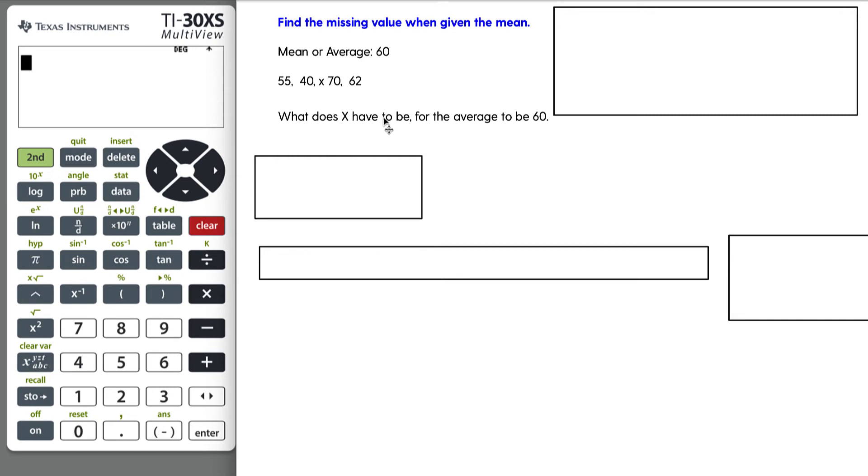And so the question is, what does X have to be for the average to be 60? So it's kind of a weird situation, right? Oftentimes they'll say like, oh, you lost some data point in a word problem and you need to find that missing number that is used to create this mean or the average of 60.